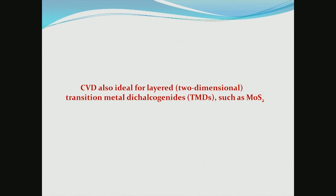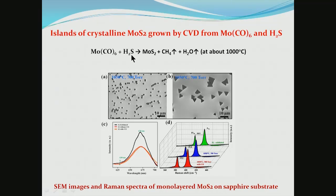CVD is also an ideal process for layered or 2-dimensional transition metal dichalcogenides like MoS2, which have become a research focus following the discovery of graphene. Just as graphene is a monolayer of carbon, MoS2 can also be obtained as a monolayer — a transition metal disulfide. Using molybdenum hexacarbonyl as one precursor along with hydrogen sulfide under the right CVD conditions, one gets molybdenum disulfide. SEM micrographs show monolayer pieces of very well-shaped triangular MoS2 layers, confirmed as single monolayers by Raman spectra.